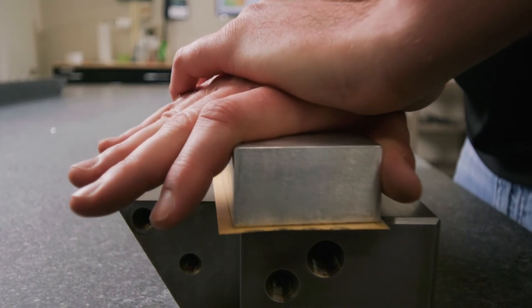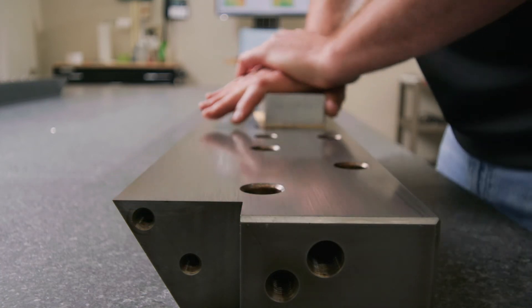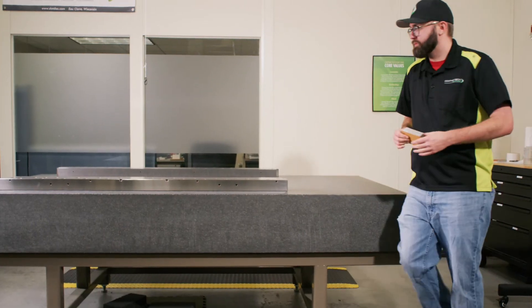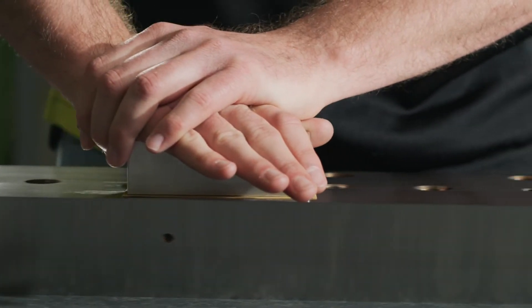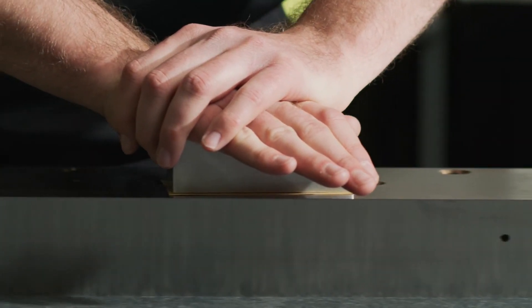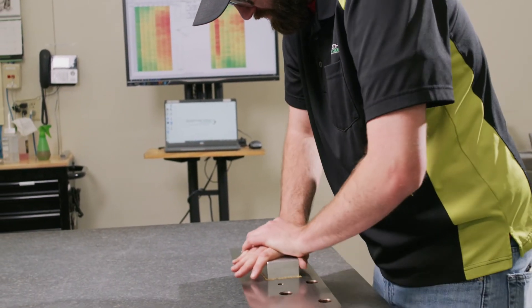When we're looking at attaining one micron of variation, that has to be done with handwork. A machine can only get to a certain level, and for you to understand what a micron really is—it's one-ninth the thickness of a human hair—and so it takes a very special group of people in order to achieve that level of precision.